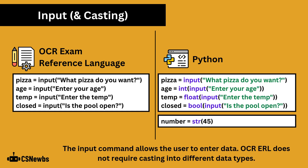The input command allows the user to enter data. OCR ERL does not require casting into different data types. With Python, data is automatically input as a string. If you require the data to be treated differently, such as performing a calculation on a number, you will need to cast it into a different data type. Int is to convert it into an integer, float is for a decimal number, bool is for a boolean value, and str also exists to convert a value into a string.